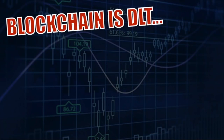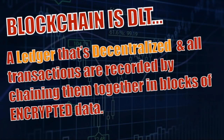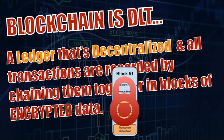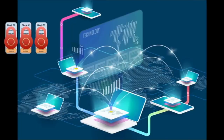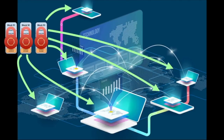So blockchain, real quick, is distributed ledger technology. It is a ledger that's decentralized and all transactions are recorded by chaining them together in blocks of encrypted data — that's why it's called blockchain. Someone does a transaction and that's block 51, they encrypt it; next is block 52, someone else does a transaction and they encrypt that; then block 53, and so on. You have chains and chains of blocks in distributed ledger technology, all broadcast to different nodes — could be 10, 20, or thousands depending on the cryptocurrency. Bitcoin has thousands; EOS has 21 block producers. That's why it's a trustless, peer-to-peer type of technology.